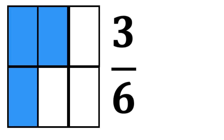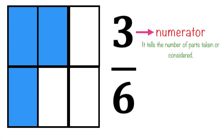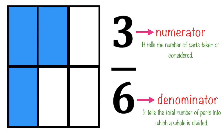Let's analyze this example. Since we have three shaded parts, the numerator is three, while the denominator is six, since we have six equal parts. The numerator tells the number of parts taken or considered — it is the number of shaded parts — while the denominator is the total number of parts into which a whole is divided.